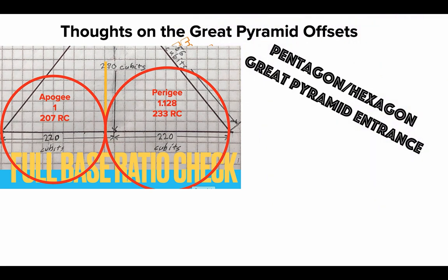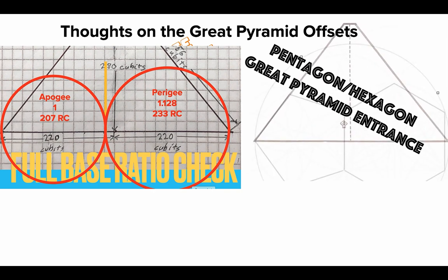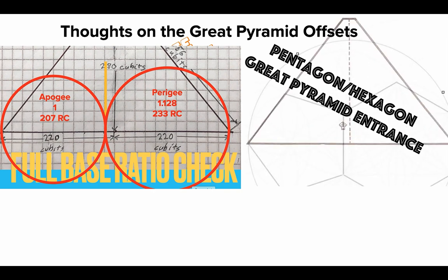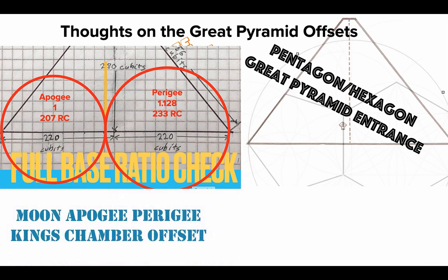What about the pentagon/hexagon at the Great Pyramid entrance? We've talked about this before. The common side of the pentagon and hexagon symbolizes the merger of heaven and earth. So if you're going to enter in, enter recognizing that you're offset, imperfect — that's the key to entering in. That's what I've suggested that means.